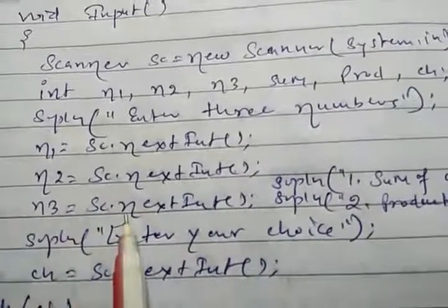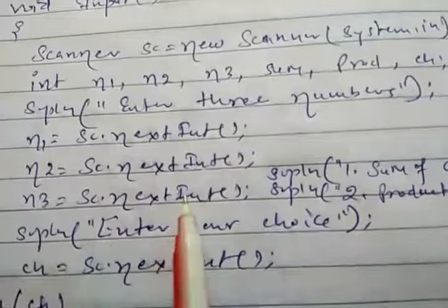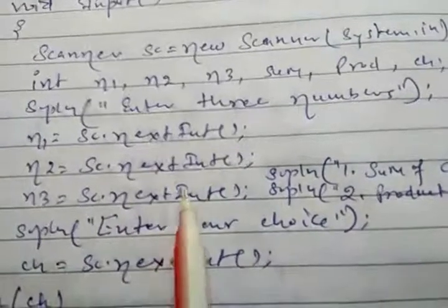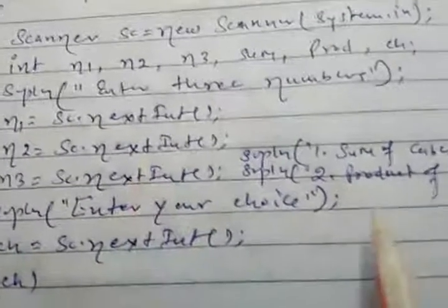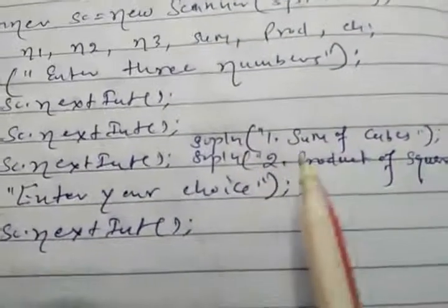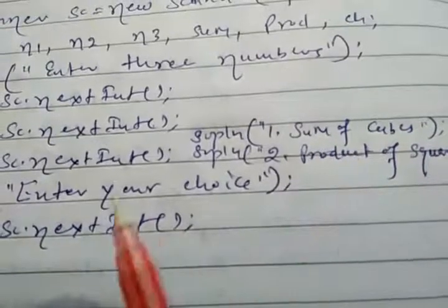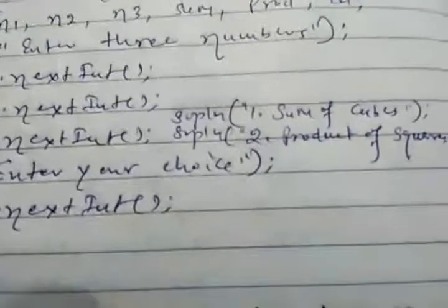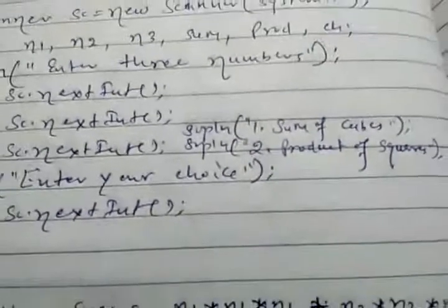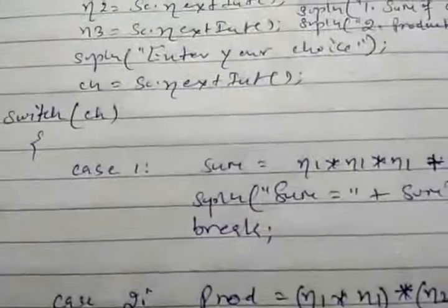The menu displays: option 1 is sum of cubes, option 2 is product of squares. Enter your choice: ch = sc.nextInt(). Then switch(ch) — in case 1, we have to perform the sum of cubes.